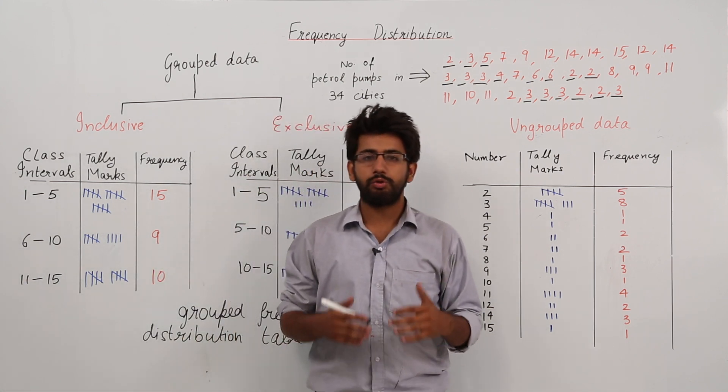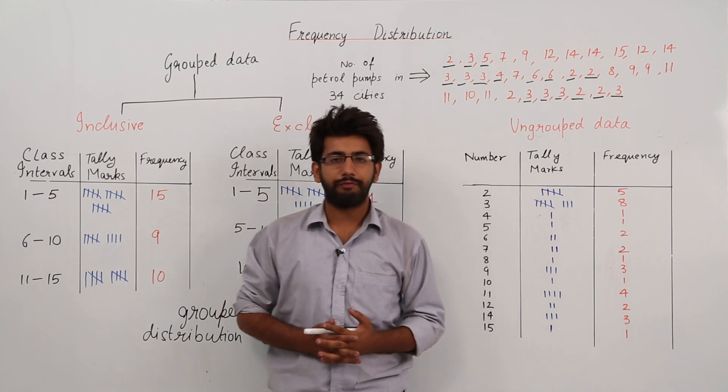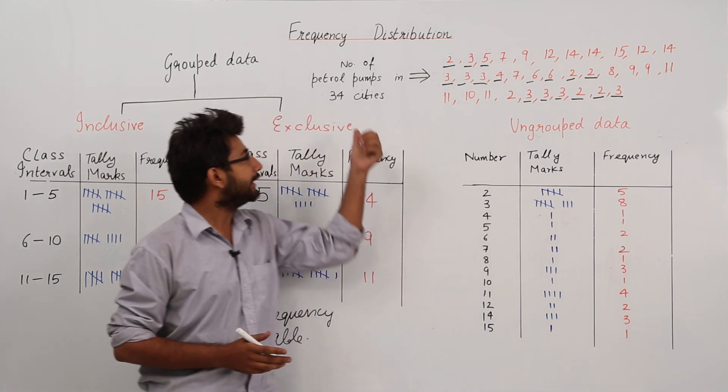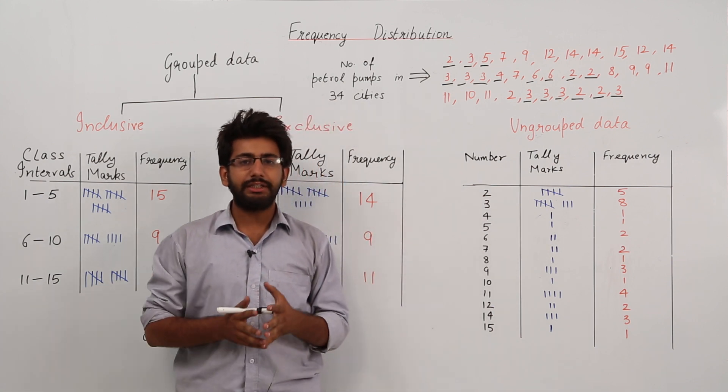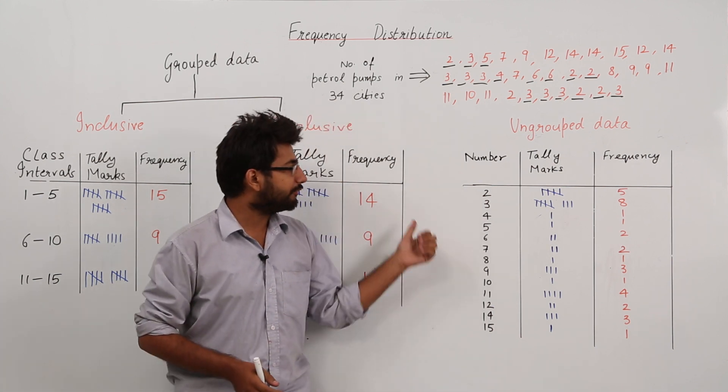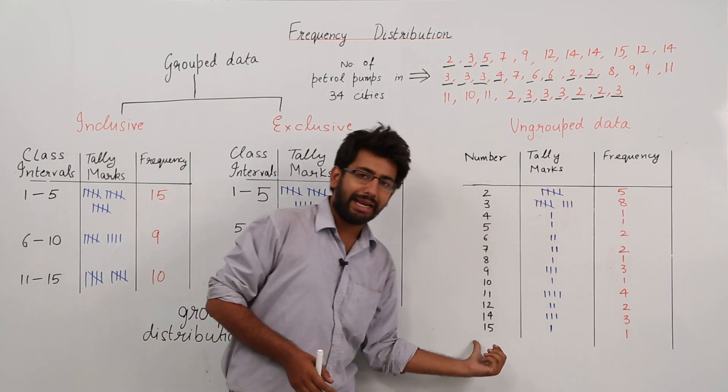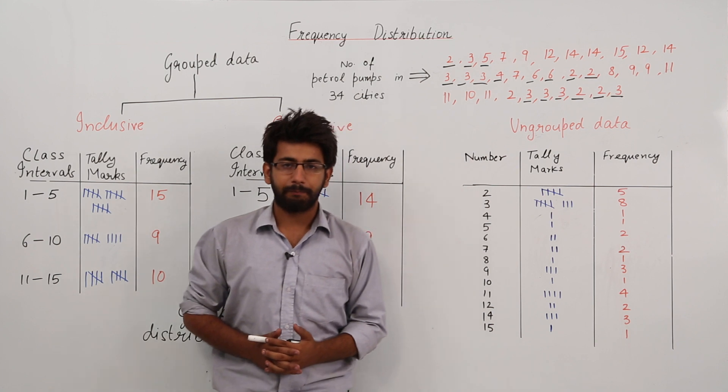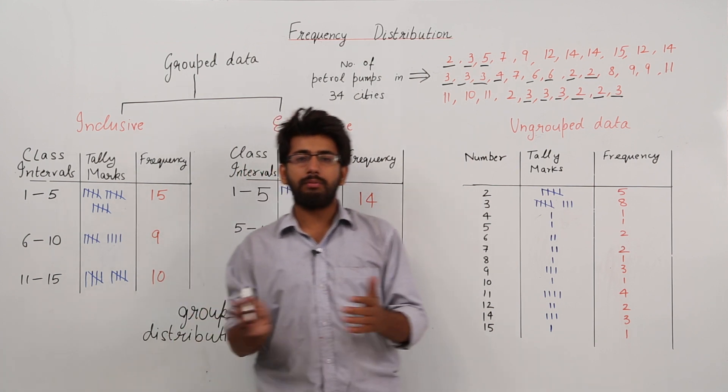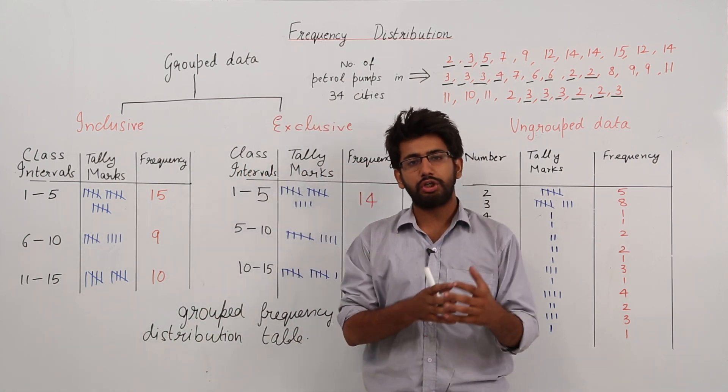But sometimes when the data is very large or it contains a lot of elements, like if it has 34 cities, what if it was 34,000 cities? Then in such a case it is not advisable to write the frequency of each and every element. Rather, it is more convenient to form groups.